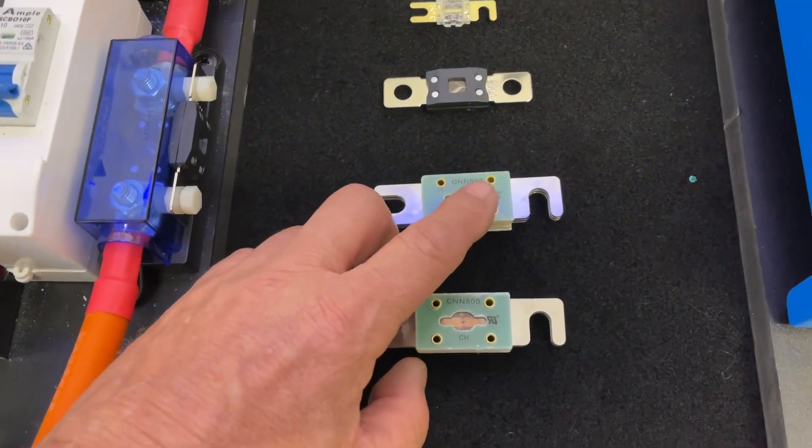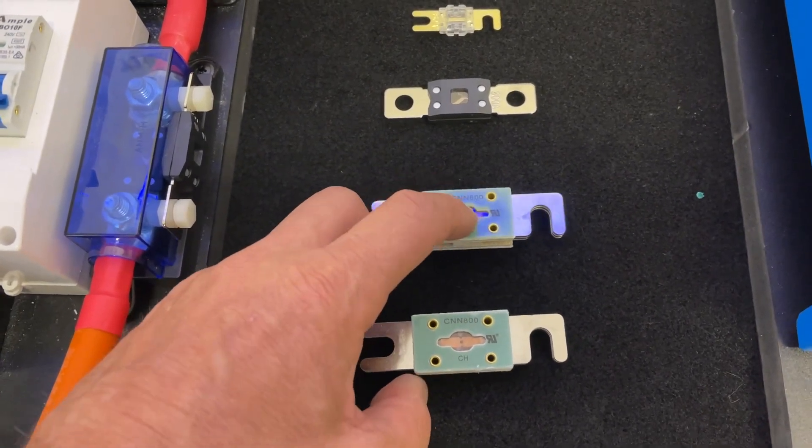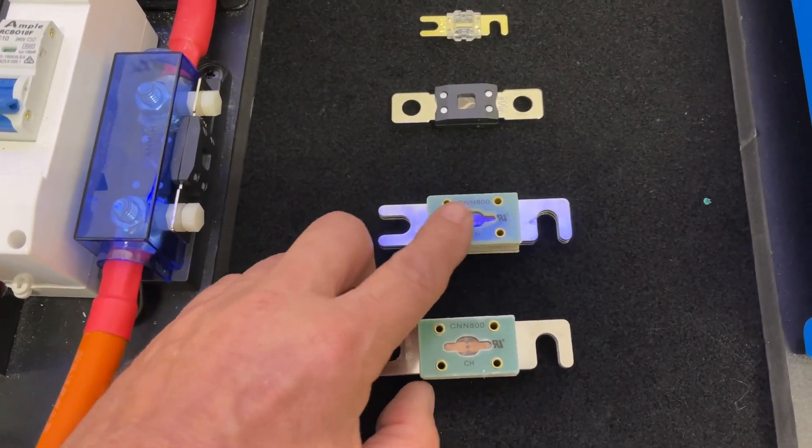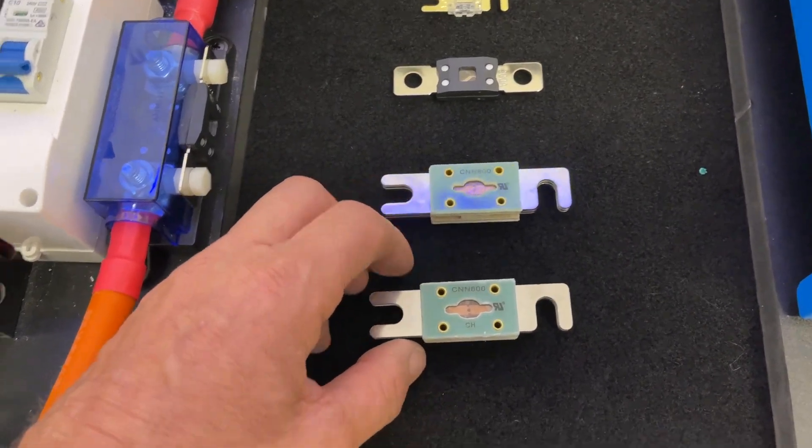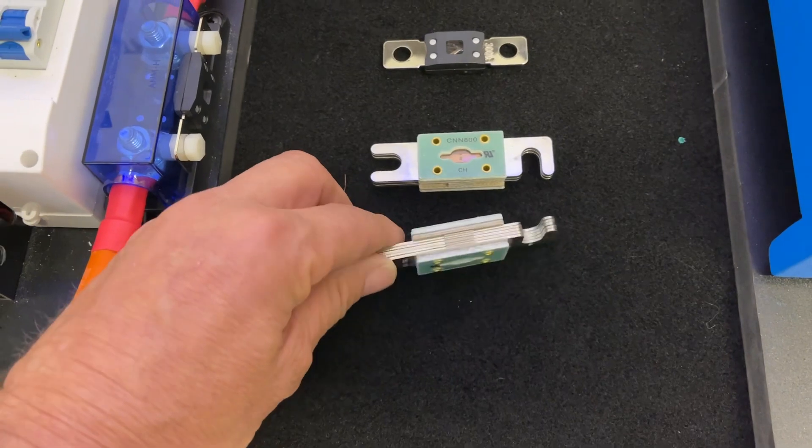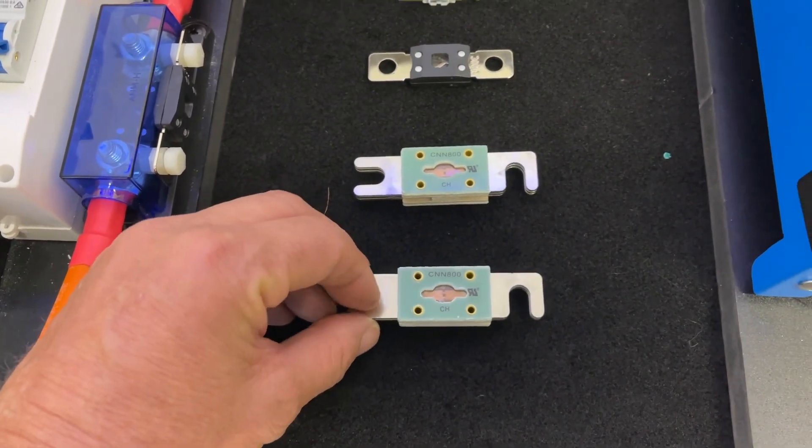These CNN 800 fuses have a protective layer that keeps the blown fuse inside. There's no chance of any spark or ignition when they blow, so these are super expensive.